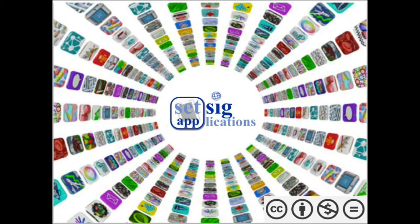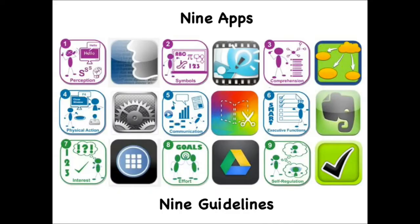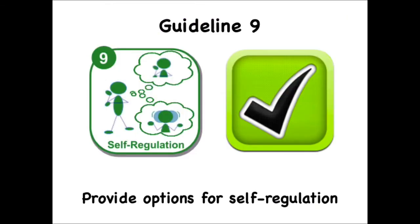Welcome to SETSIG's UDL Applications. This series of videos will explore how apps can, when chosen with intent, support the design and delivery of Universal Design for Learning. We will focus on nine powerful apps as we address each of the nine guidelines that define UDL. This video will explore multiple means of engagement as we narrow our focus down to guideline nine, options for self-regulation. To support this guideline, we will use the iPad app Habits Pro.